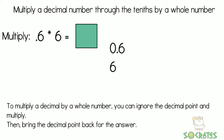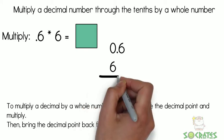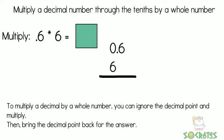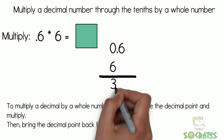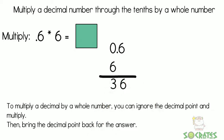0.6 times 6. So we know that 6 times 6 is 36. So we put our 36 down, but then we have to look at where is the decimal point.